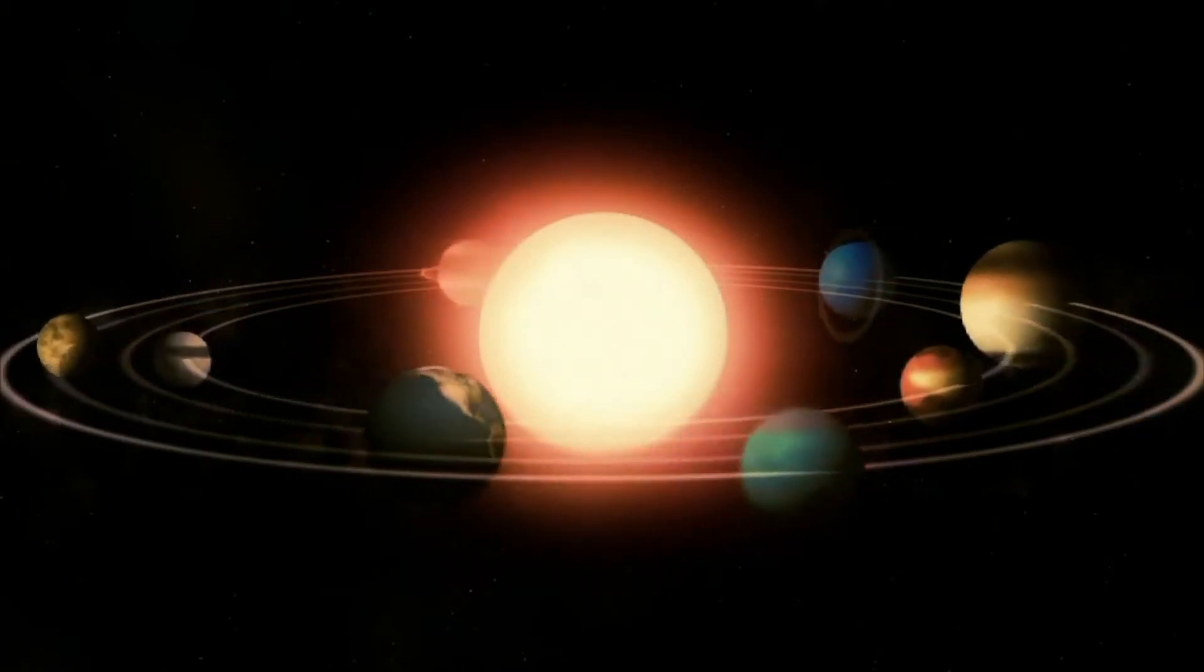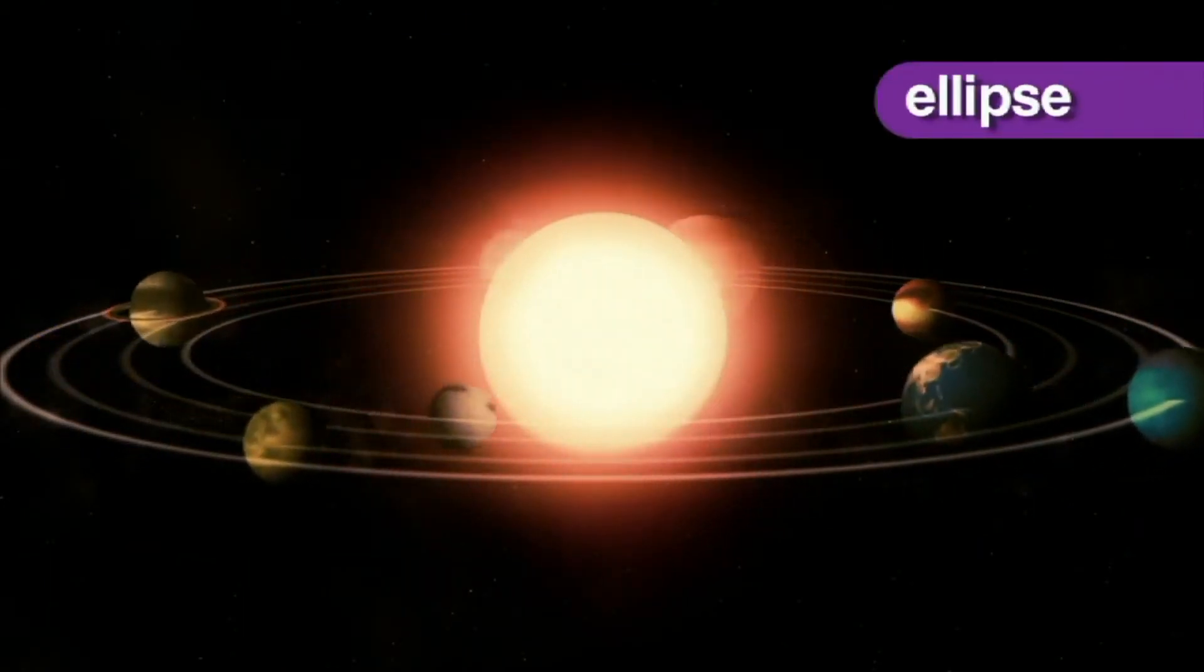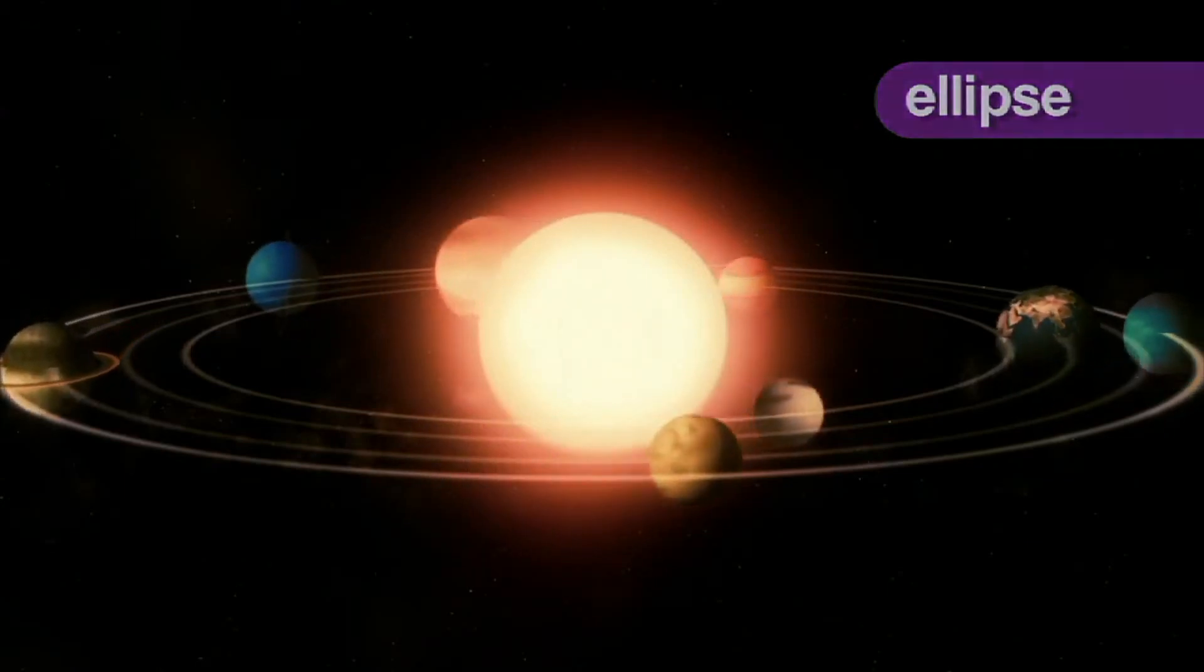The shape of a planet's orbit is an ellipse. An ellipse is an oval, or a stretched-out circle.